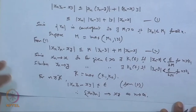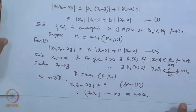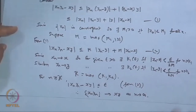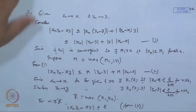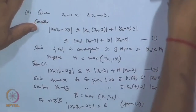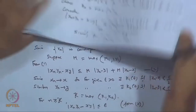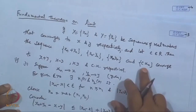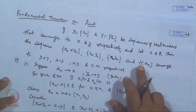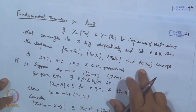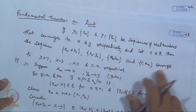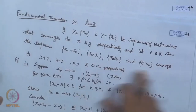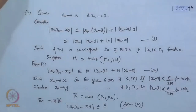For the scalar multiple c·x_n, you can consider y_n as the constant sequence c, c, c, ... which converges to c, and by the product result c·x_n will converge to c·x.